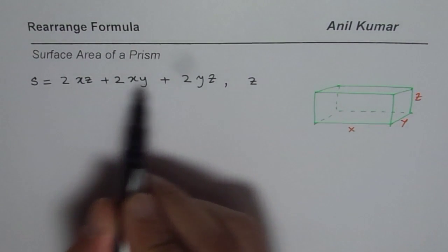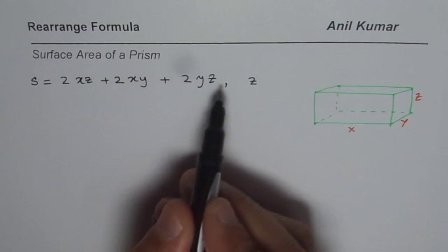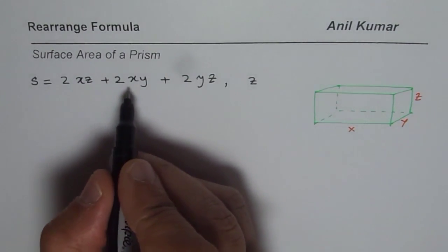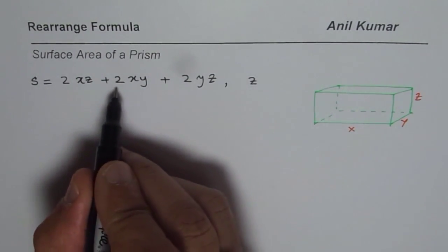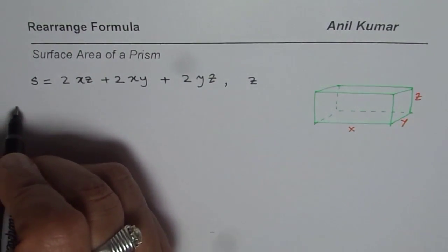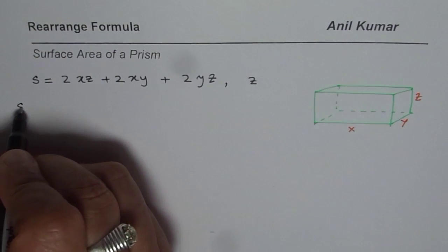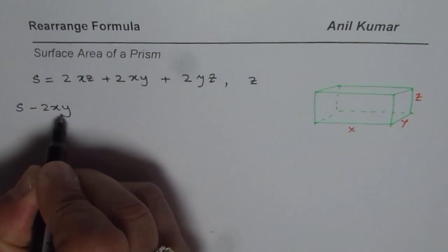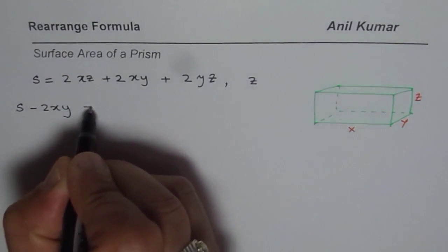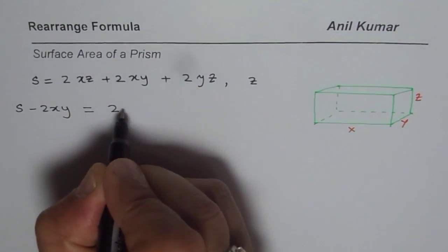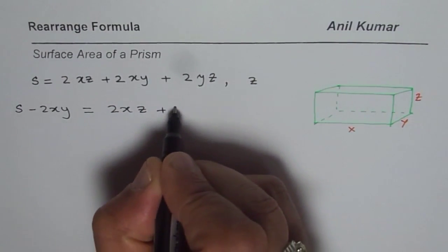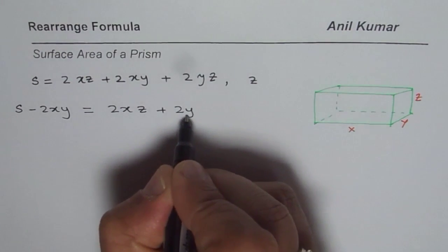As you can see, there are two terms in which we have Z, so we could factor those. The middle term, 2XY, does not have Z, so what we'll do is take away 2XY from both sides. The result is: S minus 2XY on the left side equals 2XZ plus 2YZ on the right side.